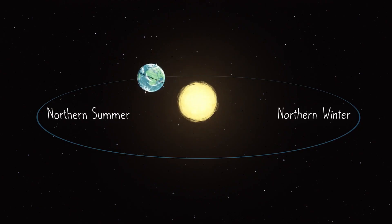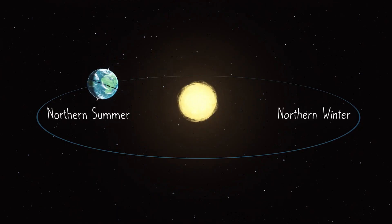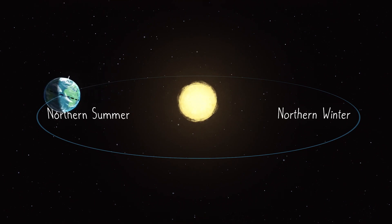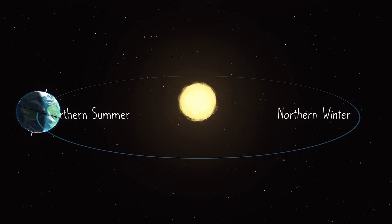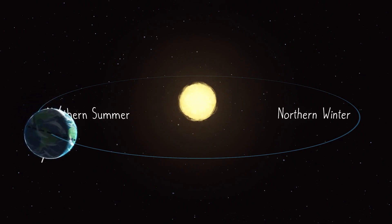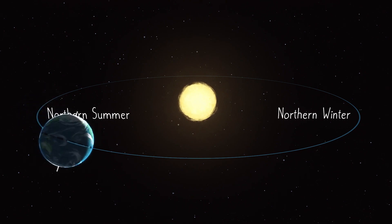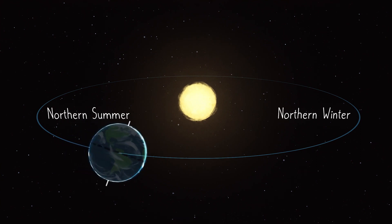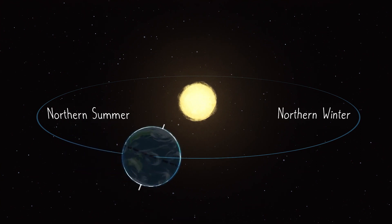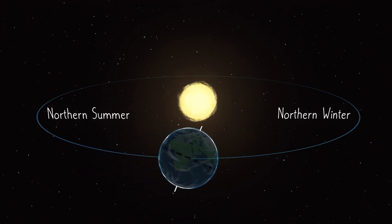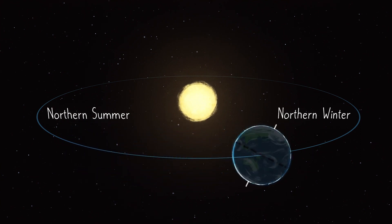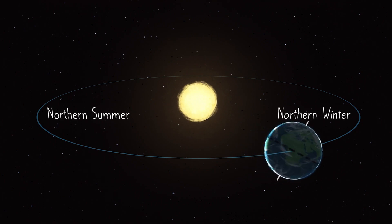The tilt of the Earth's axis relative to the ecliptic plane is what gives us our seasons. During the summer and winter solstices, the Earth's axis is tilted towards or away from the Sun, respectively.